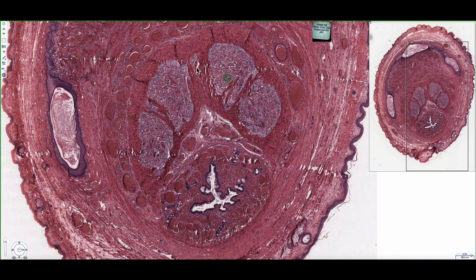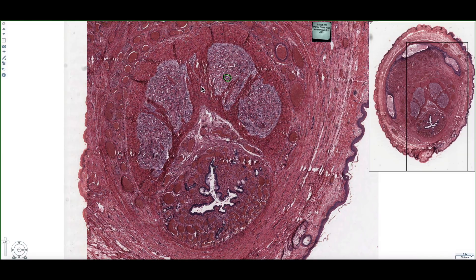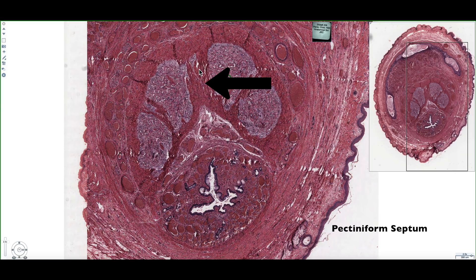The region between the two corpus cavernosa that's filled with this dense connective tissue has a specific name — it's called the pectiniform septum. In some cases this area may be incomplete, so you may actually see the two masses of the corpus cavernosa meeting up with one another.